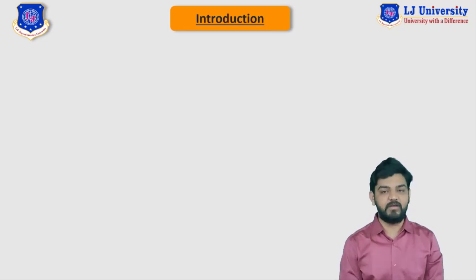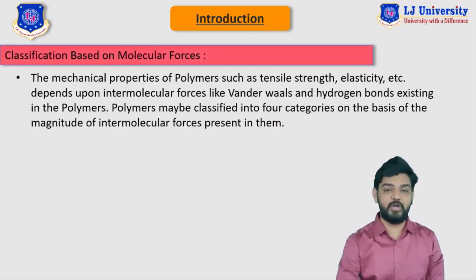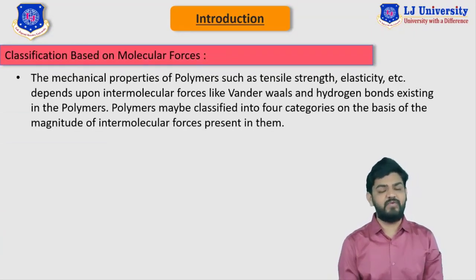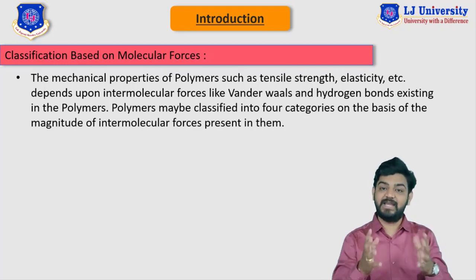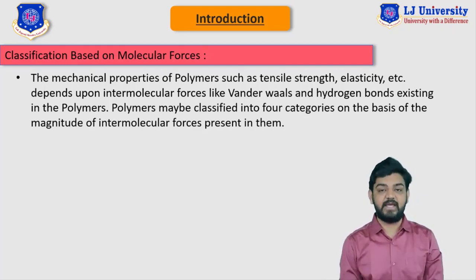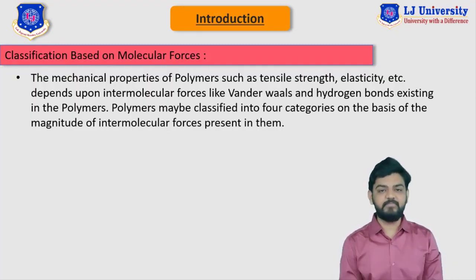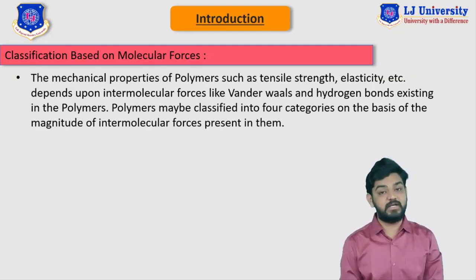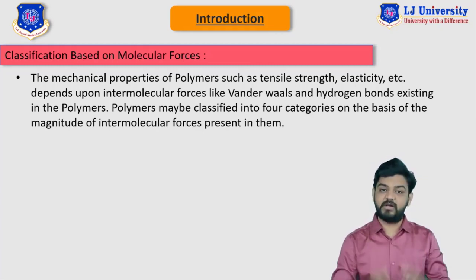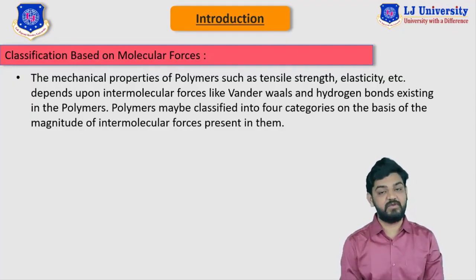In this video, we will see classification of the polymer based on molecular forces. These intermolecular forces between different monomers joining together are very important to determine their mechanical properties, tensile strength, and density. There are basically two different molecular forces: the van der Waals bond and the hydrogen bond. The magnitude of these forces classifies polymers into four categories: elastomer, fiber, thermosetting, and thermoplastic polymers.